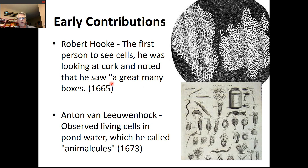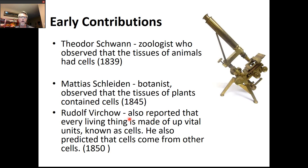The next person we talk about is Anton van Leeuwenhoek. He saw living cells. The cork cells that Hooke looked at were not alive, but van Leeuwenhoek was looking at pond water and he saw tiny little animals — or 'animalcules,' meaning 'little animal' — in the pond water. That was in 1673, and that was the first living cell that somebody saw.